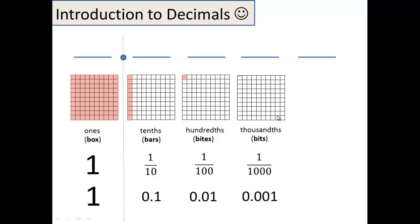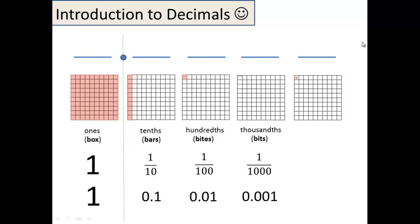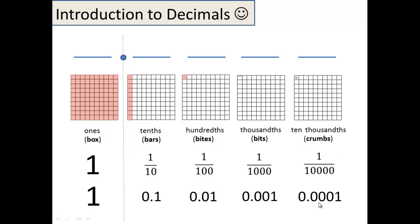And for the sake of sixth grade, we're only going to go one further. I'm going to take this bit, cut it up into ten equal pieces. And again, I couldn't even make it as small as it should be — this thing should be like a dot. And we call that a ten-thousandth, or a crumb. That's 1 over 10,000, which is 0.0001.